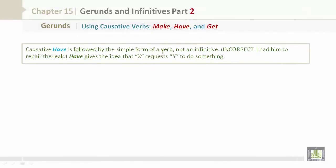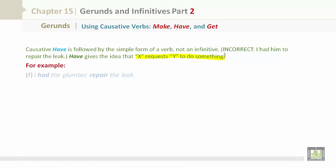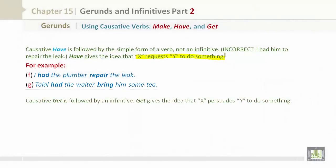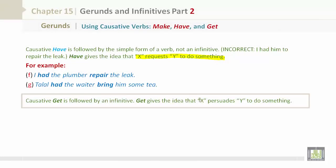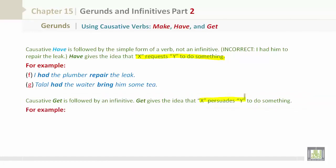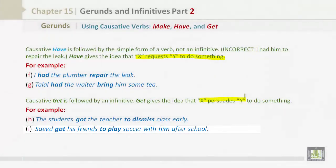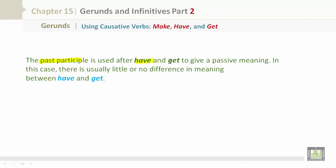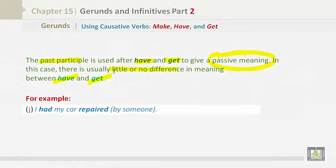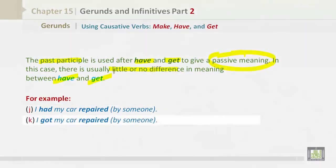The causative 'have' is followed by the simple form, not an infinitive — 'I had him to repair the leak' is incorrect. Have gives the idea that X requests Y to do something: 'I had the plumber repair the leak.' 'Talal had the waiter bring him some tea.' Causative 'get' is followed by an infinitive; it gives the idea that X persuades Y to do something: 'The students got the teacher to dismiss class early.' 'Saeed got his friends to play soccer with him after school.' The past participle is used after have and get to give a passive meaning: 'I had my car repaired.' 'I got my car repaired.' There is little or no difference in meaning between these two.